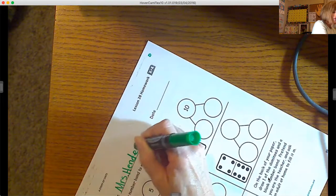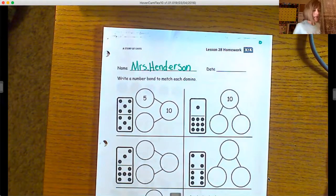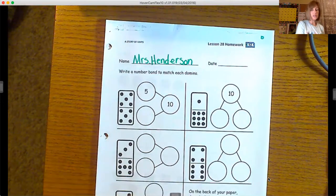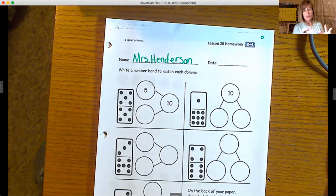All right, so we are working on number bonds again, and today our number bonds are going to equal 10. I remember that's called decomposing numbers when we're taking them apart—that's like subtracting—and then we're adding them together, we're putting them together.